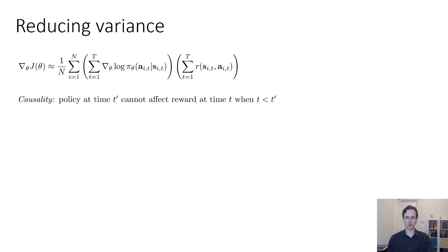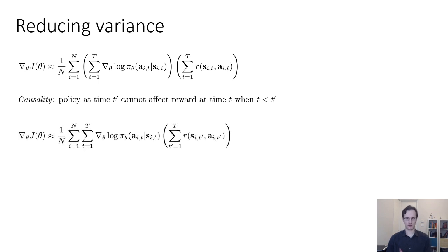The way we're going to see this is we're going to rewrite the policy gradient equation. I've not changed it in any way — I've simply rewritten it. What I've done here is use the distributive property to distribute the sum over rewards into the sum over grad log pis. So, at every time step, I multiply the grad log probability of the action at that time step T by the sum of rewards over all time steps in the past, present, and future.